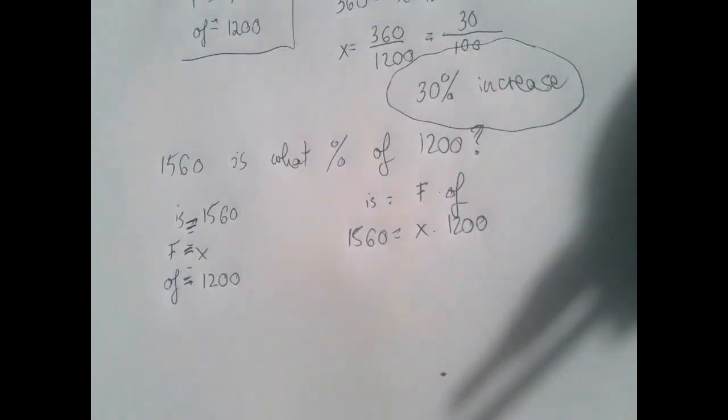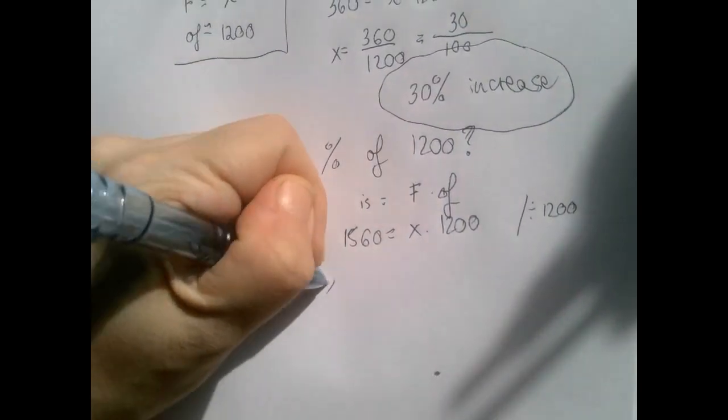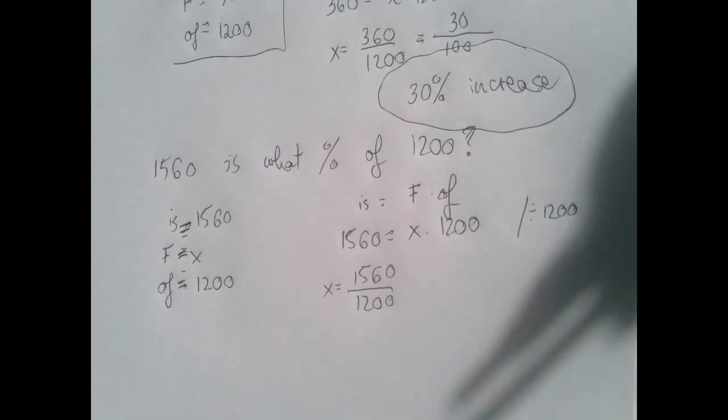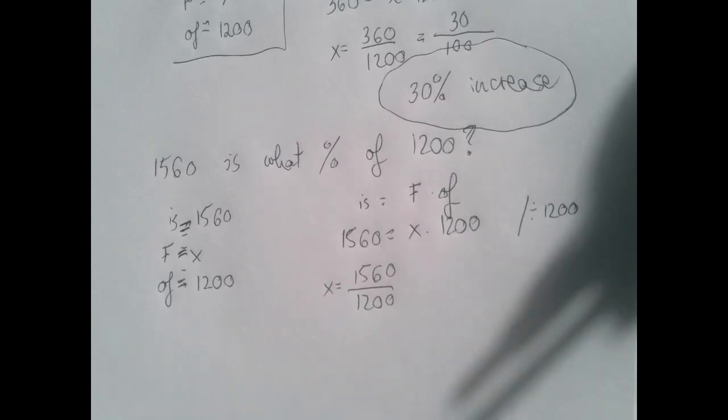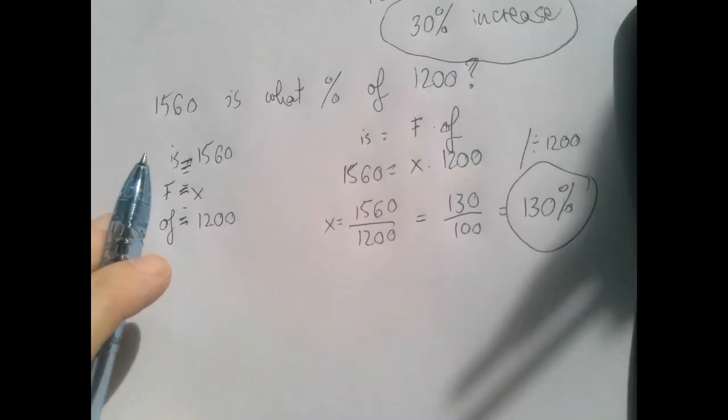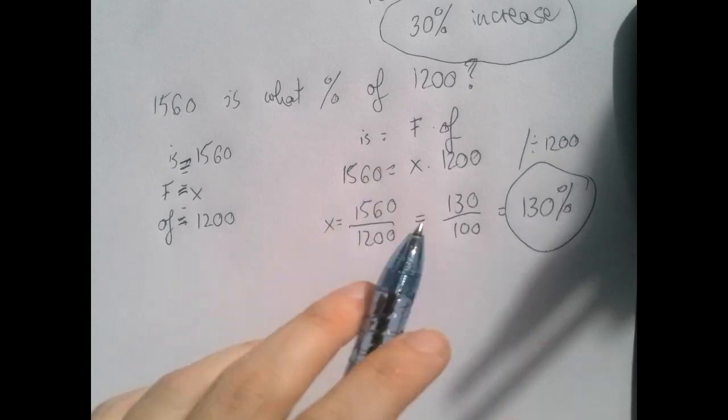To solve for x, we divide both sides by whatever is multiplying x. And so x is 1560 divided by 1200. And remember, we need a percentage. So we're not going for lowest terms. We're going for 100 in the denominator. So what we have to do is divide 1560 by 12. And our answer is that 1560 is 130 percent of 1200.